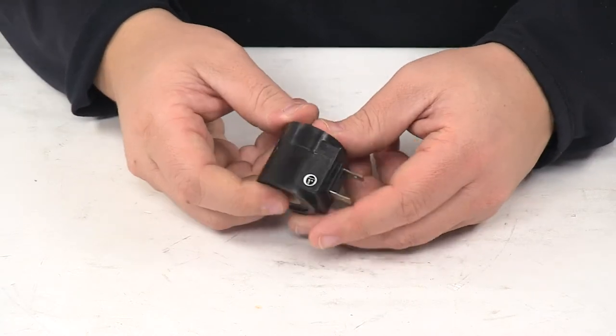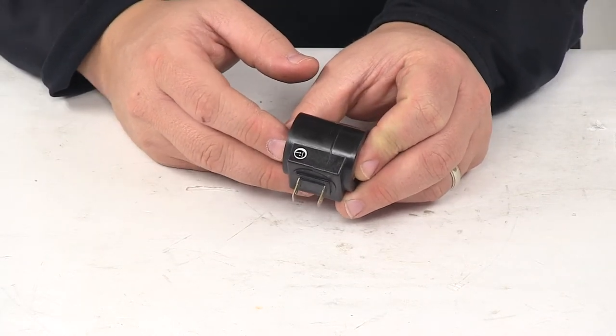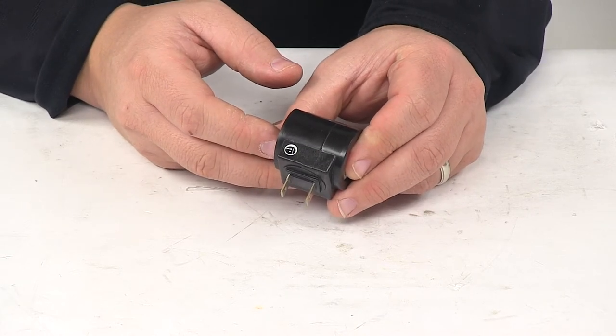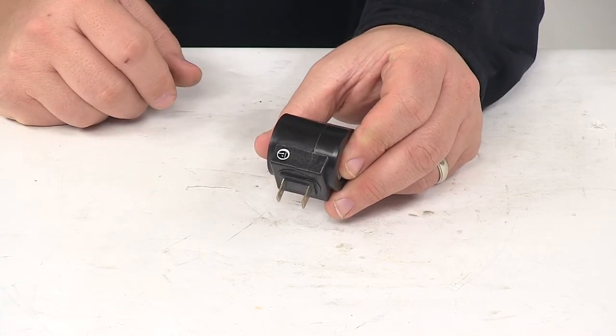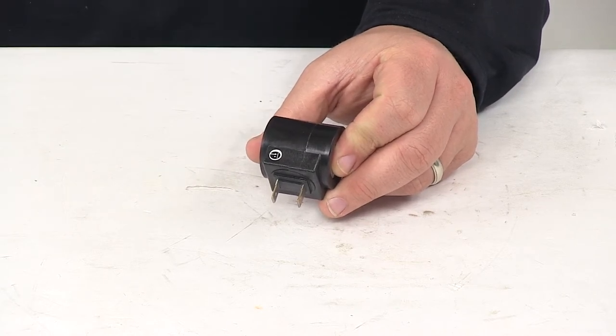That's going to do it for today's look at the replacement coil with spade terminals. Again, this replaces the coil with spade terminals for Fisher and Western snow plows, Fisher part number 7639 and Western part number 49230.